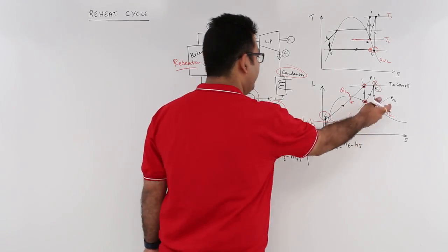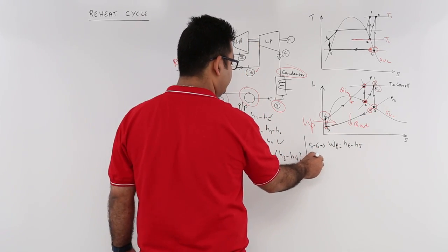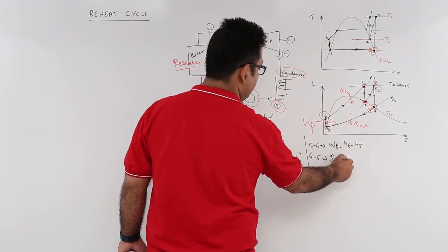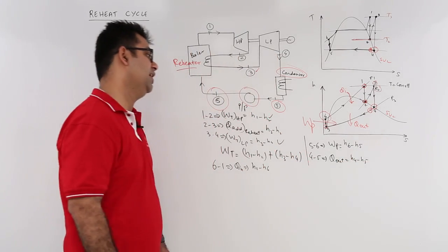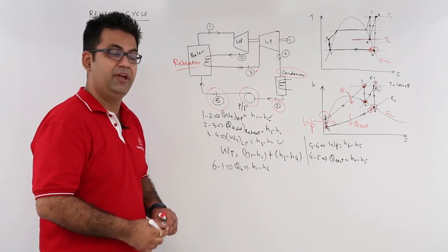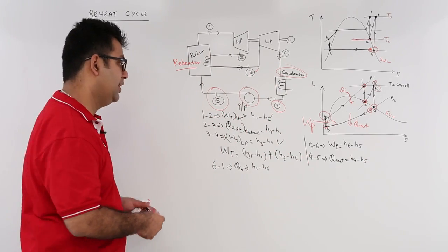The last would be 4 to 5, which is heat rejection: H4 minus H5. So this is what we look at in this reheating cycle.